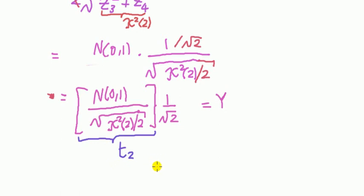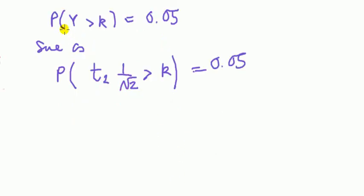So substituting this back in, basically the hard work is done now. Substituting this back, it's all downhill from here. Substituting this back into the question. So the form here, probability of Y is bigger than k, where k is what I want to find, equal to 0.05, is the same as t distribution 2 times 1 over root 2.